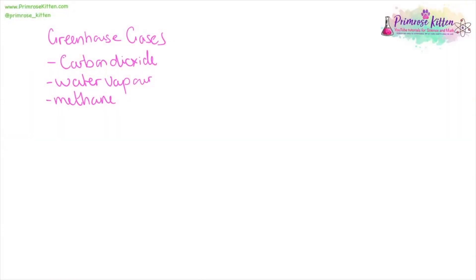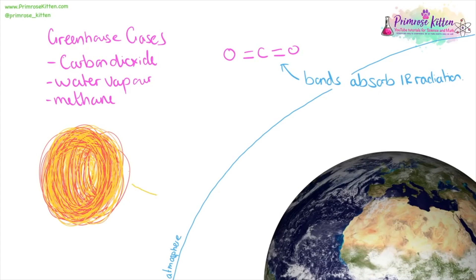There are three main greenhouse gases, with the biggest culprit being carbon dioxide, and to a much smaller extent water vapour and methane. The bonds in carbon dioxide are very good at absorbing infrared or heat radiation, which traps it inside our atmosphere and warms the planet. Heat energy from the sun would normally be reflected by the Earth straight back into space, but instead it's being trapped by greenhouse gases — carbon dioxide and methane — which means it stays in our atmosphere, heating it up.